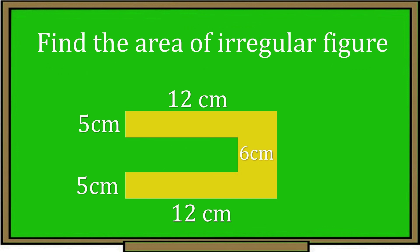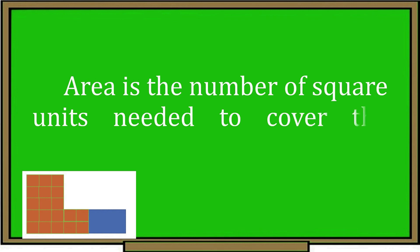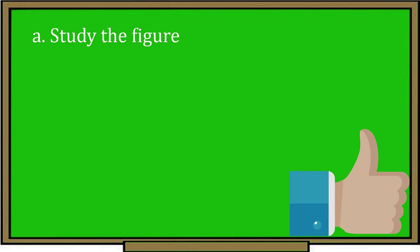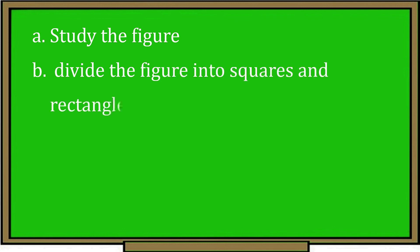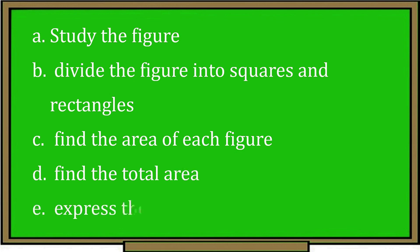For your assignment, find the area of the irregular figure. These are the things you have learned today: Area is the number of square units needed to cover the surface of a plane figure. To find the area of irregular figures involving squares and rectangles — first, study the figure; second, divide the figure into squares and rectangles; third, find the area of each figure; fourth, find the total area; and last, express the area in square units.